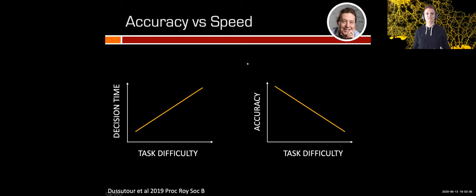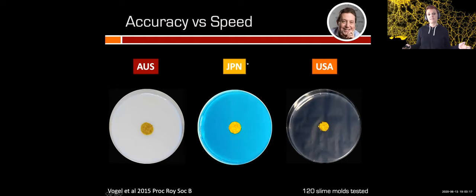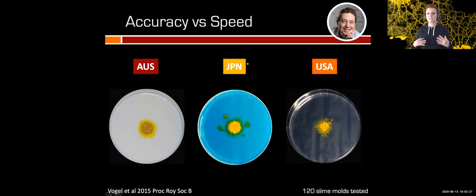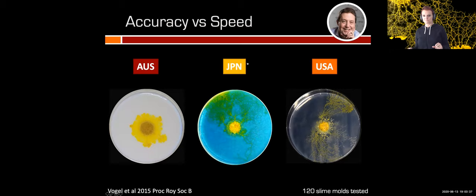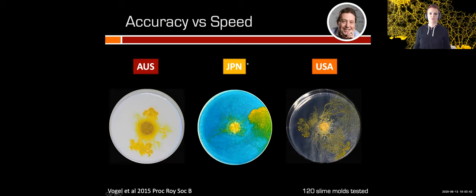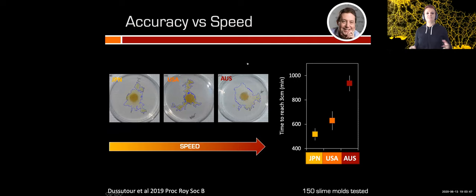We studied this relationship between accuracy, speed, and task difficulty in slime molds. We used three strains: the Australian, the Japanese, and the American strain. Here they are exploring a homogeneous environment with no food, and you can see straight away that they differ in terms of speed. The Japanese slime mold is very quick, the Australian is super slow, and the American is in between. We quantified speed using software to track the shape automatically, measuring the time to reach three centimeters. The Australian slime mold is three times slower than the Japanese.